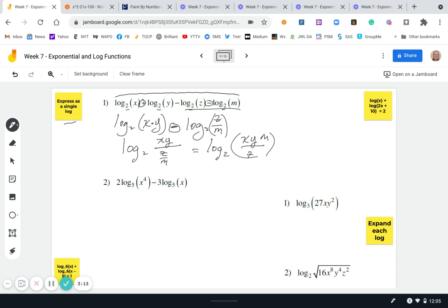So let's look at this one down here. We have two log base five of x to the fourth minus three log base five of x. So we can move the two into the exponent.